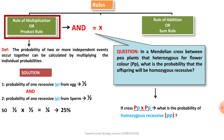One over four equals 25%. यहाँ पर multiplication का sign है — mid में 'and' है जो product rule indicate करता है। दो halves को multiply किया तो result आया one over four, mean 25%. इसका मतलब है कि अगर हम two heterozygous plants को cross करें, तो four offspring बनेंगे, उन four में से एक homozygous recessive होगा — यानी 25% probability of homozygous recessive।